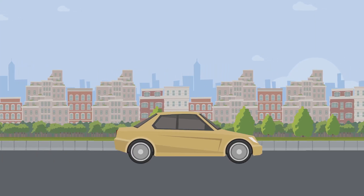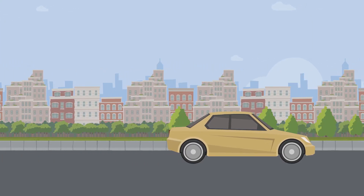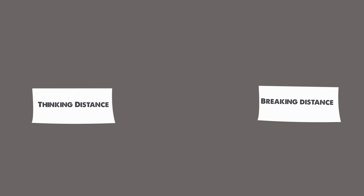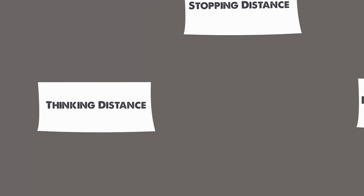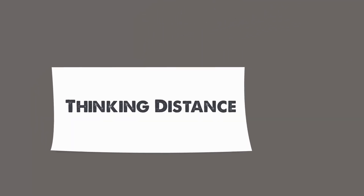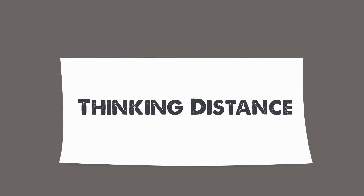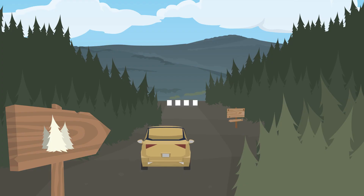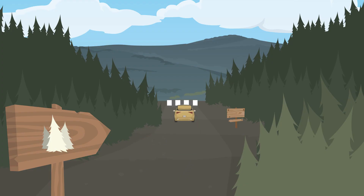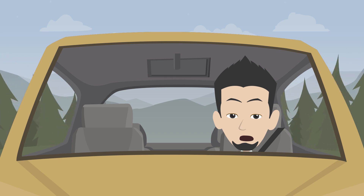We need to know the different factors that will affect the thinking distance and the braking distance, and therefore the stopping distance. Let's first look at thinking distance. The thinking distance can be found from the speed of the car times the driver's reaction time.